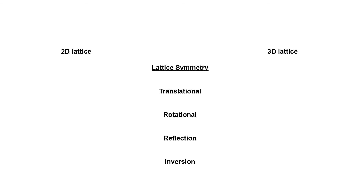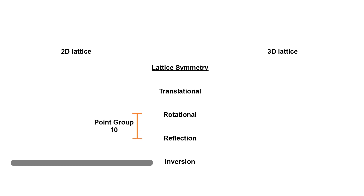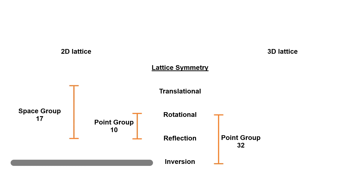These four types of symmetries are found in any lattice and together can form many possible combinations. Since inversion is applicable only in three-dimensional lattices, the combinations formed from rotation and reflection symmetry in a two-dimensional lattice are called point groups, which number ten. The combinations from rotation, reflection, and inversion in three dimensions number 32. Adding translational symmetry to these combinations gives the space group — the combinations from all four symmetries are 17 in two dimensions and 230 in three dimensions.